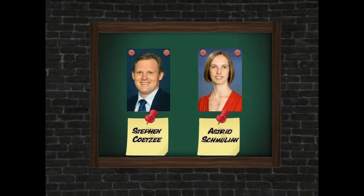Hello, my name is Astrid Schmulian and with me today is Stephen Kutsia. We are both lecturers on an introductory course to IFRS and this is an IFRS for Rookies presentation. The purpose of this presentation is to provide you with a brief overview of IAS 36, Impairment of Assets.